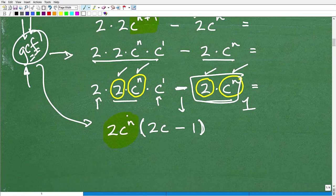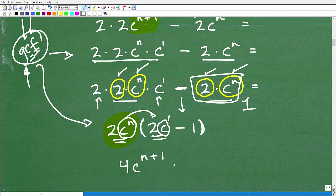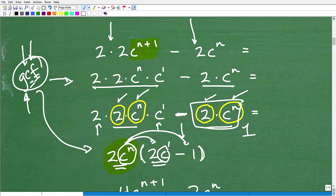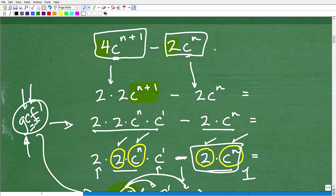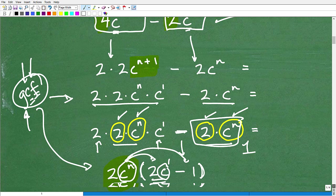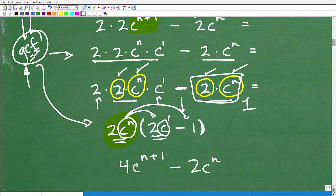And the way we can check our work, that we actually factor this correctly, is if we multiply 2 times C to the N times 2 times C, what do we get? We get 4 C to the N times C to the first is going to be C to the N plus 1. Minus 2C N times 1 is going to be 2C N. And if I'm not mistaken, 4C to the N plus 1 minus 2 times C to the N, and that was our original problem.